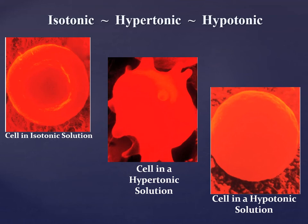In a hypotonic solution, the red blood cell becomes swollen because the inside of the cell is more concentrated than the outside, so fluid moves into the cell along a concentration gradient — from lower to higher concentration. Half normal saline (0.45%) is a hypotonic solution. The cell starts to swell, and we have to be careful because tissues can swell as well.